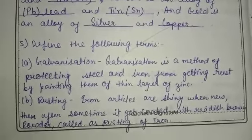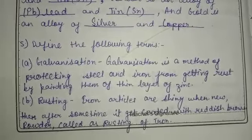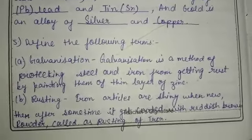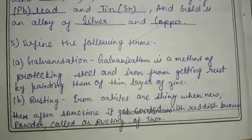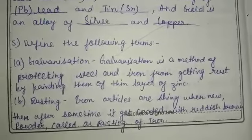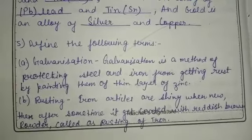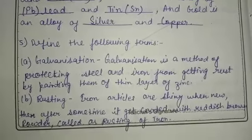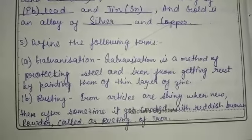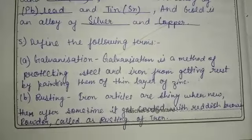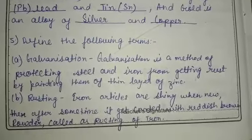The question is: define the following terms. First, galvanization. What is galvanization? Galvanization is a method of protecting steel and iron from getting rust by coating them with a thin layer of zinc.